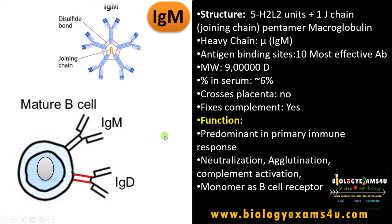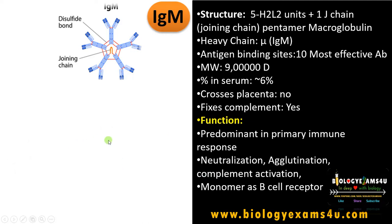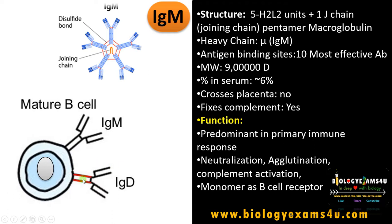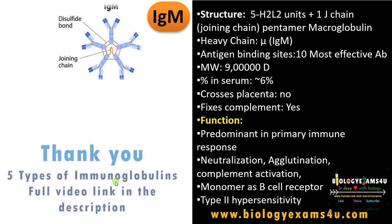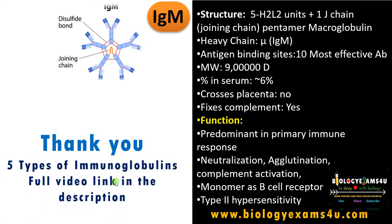One more function is that the monomer of IgM acts as a B cell receptor. The mature B cell receptor is often monomeric IgM. IgD also acts as a B cell receptor. Additionally, IgM mediates type 2 hypersensitivity reactions.